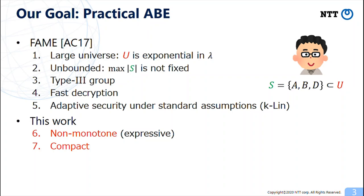The maximum size of attribute sets are not fixed. It runs in first type 3 groups. Decryption can be done with a small number of pairings. They achieve adaptive security under standard assumptions or k-linear assumptions.